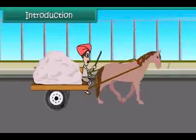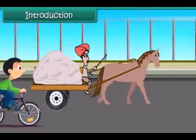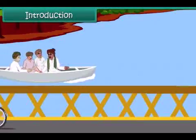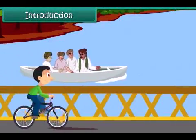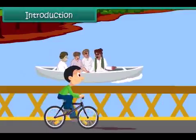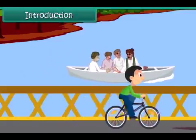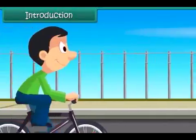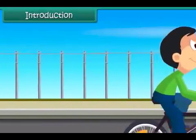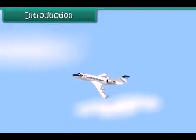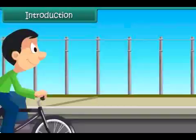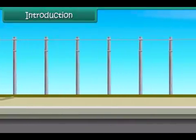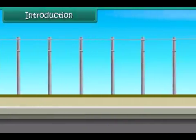He cycles past a bullock cart carrying sand. Soon he is cycling along the banks of the Yamuna river. He finds men crossing the river in boats. He hears a noise in the sky and looks up to find a jet fly past. In this lesson, you will learn about different modes and means of transport.